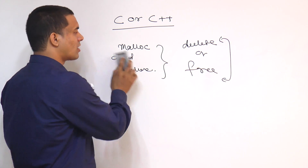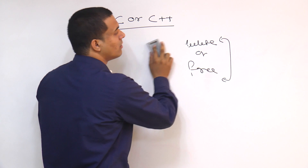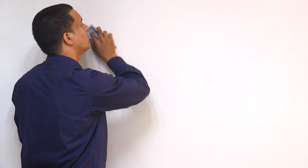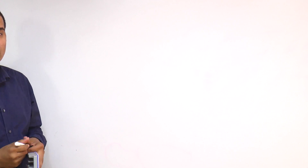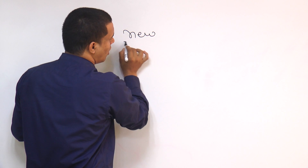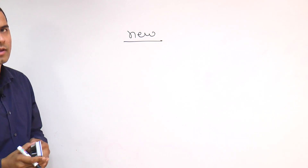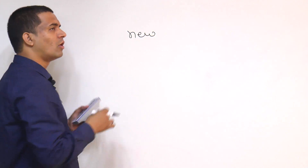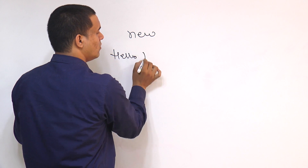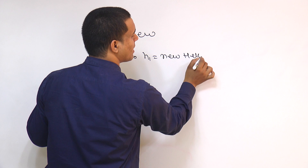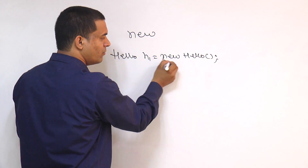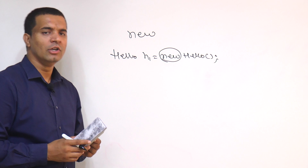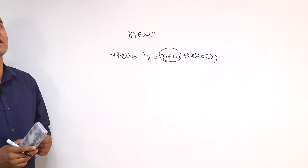But when we are talking about Java, in the case of Java, we can allocate memory. Can anyone tell how we can allocate the memory? The memory can be allocated by using the new operator. You have used the new operator many times. If you are writing 'Hello h1 = new Hello()', what it will do with the help of this new keyword is allocate memory inside the heap memory for that corresponding object. In Java, this is one way to allocate memory — by using the new operator.